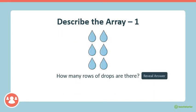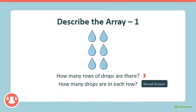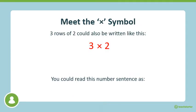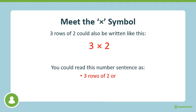Okay, we have an array here that we're going to describe. How many rows of drops are there in this array? That's right, there's three rows. And how many drops are in each row? That's right, there's two drops in each row. So there are three rows of two. Meet the multiplication symbol, looks just like an x. So three rows of two could also be written like this: three multiplied by two. You could read this number sentence as three rows of two, or three times two, or three multiplied by two.